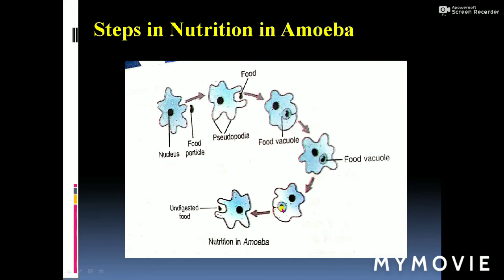In this step, digestive juices help in the digestion of the food particle inside the vacuole. After digestion, the food is absorbed by the body. The undigested food - the waste material - passes out through the cell membrane to the outside. Since amoeba is a water animal, the undigested food is released into the water.